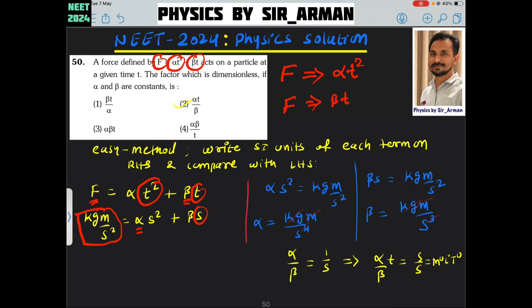Now I am just comparing these two terms. First, I am comparing this alpha S square with kg meter per second square. So alpha will be kg meter by S raised to 4, or second raised to 4.